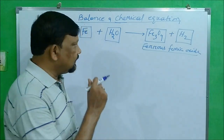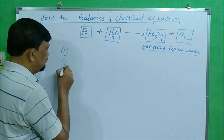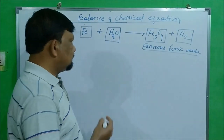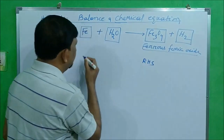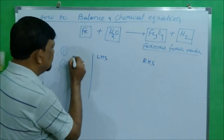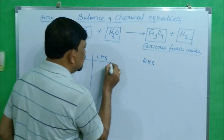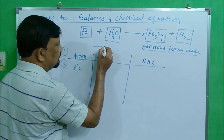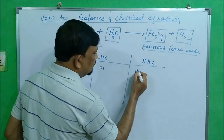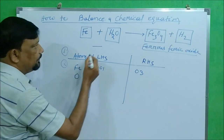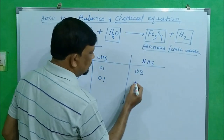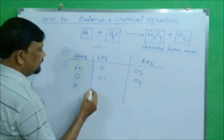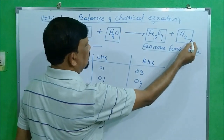The second step is to find out the number of atoms present on the reactant side (LHS) as well as on the product side (RHS). Iron (Fe): LHS = 1, RHS = 3. Oxygen: LHS = 1, RHS = 4. Hydrogen: LHS = 2, RHS = 2. Hydrogen is already balanced, but iron and oxygen are not.